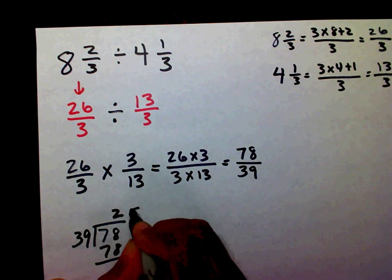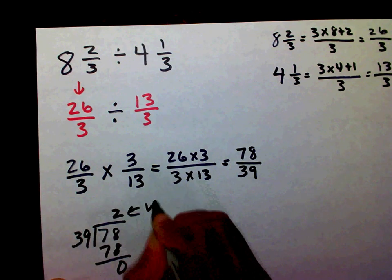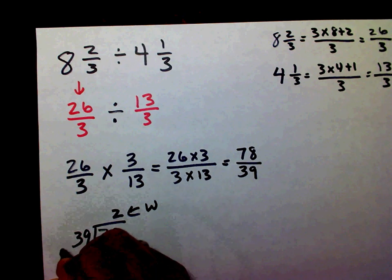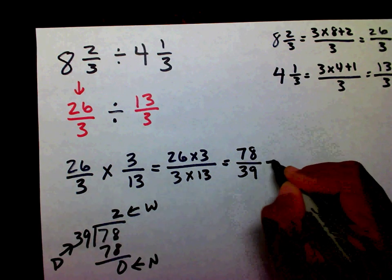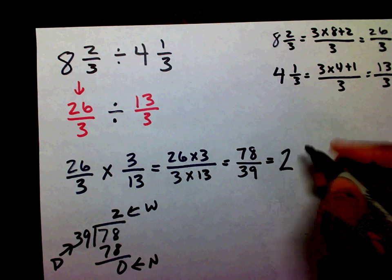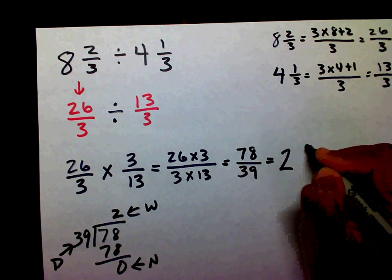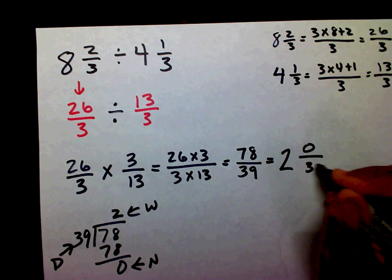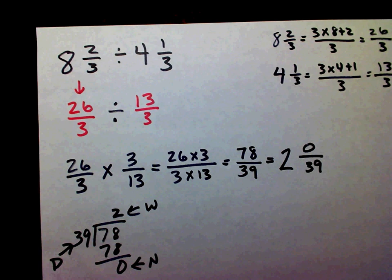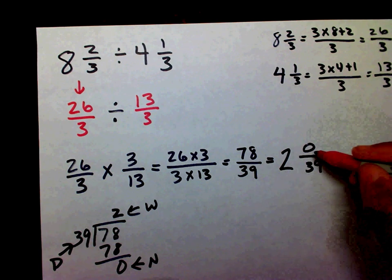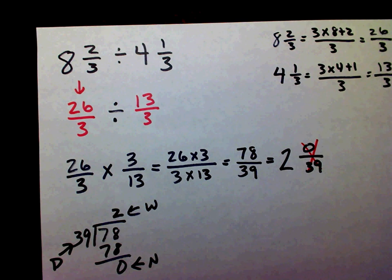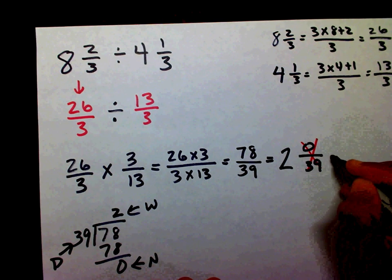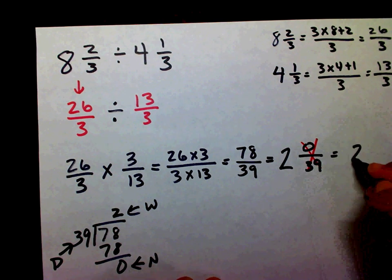So here's my whole number, here's my numerator, here's my denominator. I can write two and zero thirty-ninths. Whenever you have a zero in your numerator, that equals zero, so you can just write your final answer as two.